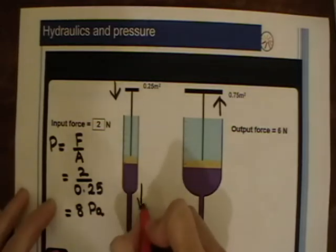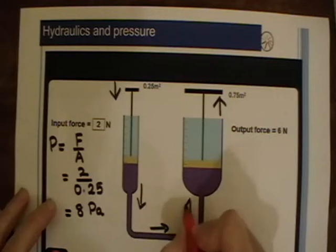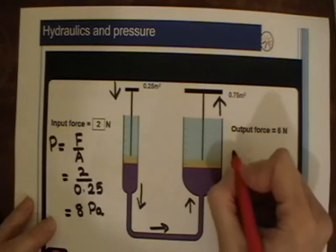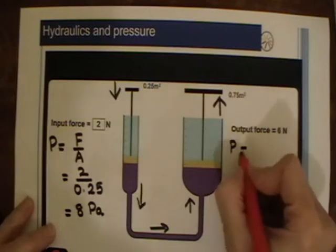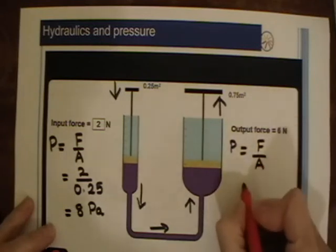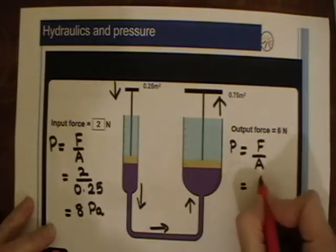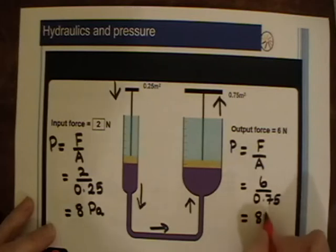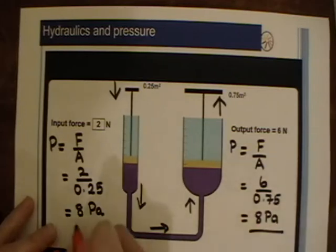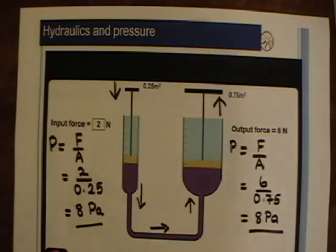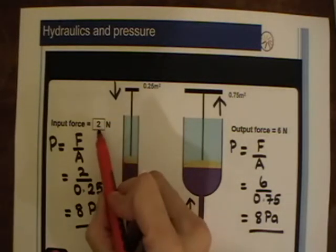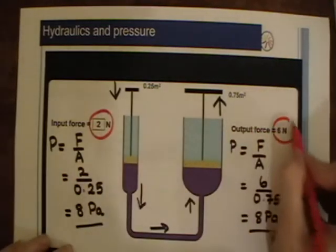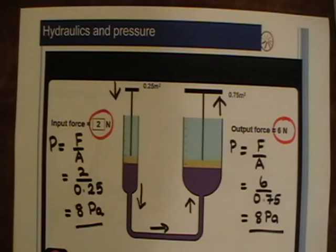That pressure of 8 pascals is transmitted the whole way through the liquid to the other side. On the output side, there is a force of 6 newtons over an area of 0.75 metres squared: 6 divided by 0.75 also gives 8 pascals. So the pressure is the same on both sides. Notably, a small input force is being used to produce a larger output force.